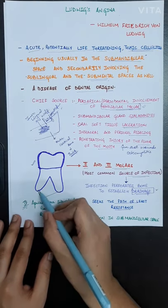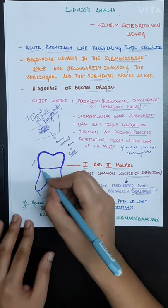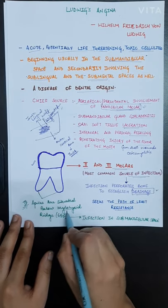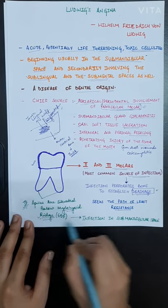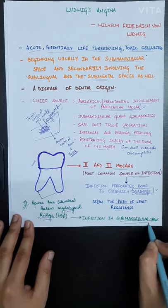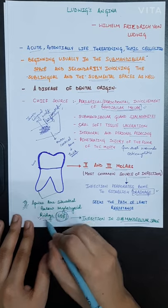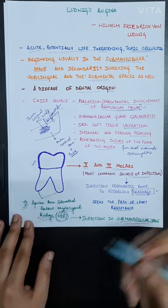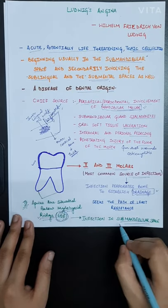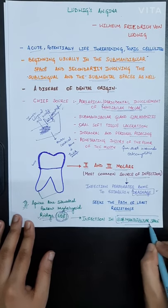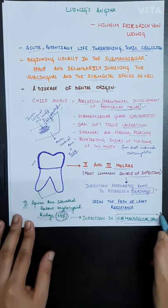Basically, if the apices of the mandibular molars are situated below the mylohyoid ridge, it will cause infection in the submandibular space. The apices are situated below the mylohyoid ridge in around 65% of the teeth, which is why it is most common for the infection to spread in the submandibular space.